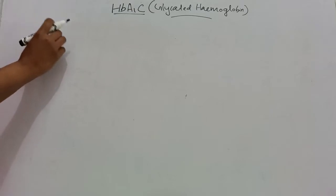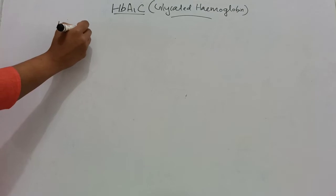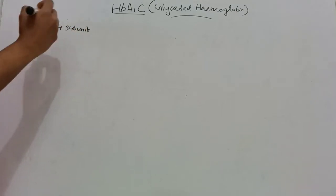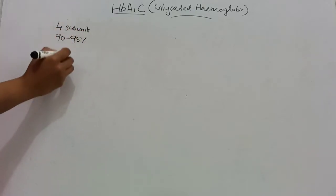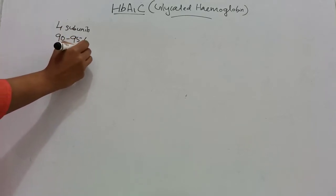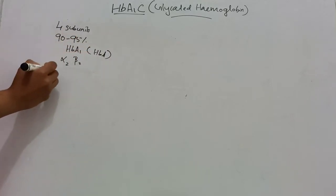Normal human hemoglobin is of several types which contains 4 subunits which are made of various combinations of different polypeptide chains. In this, 90 to 95% of hemoglobin of normal adult is HbA1 or HbA, and this consists of 2 alpha chains and 2 beta chains.